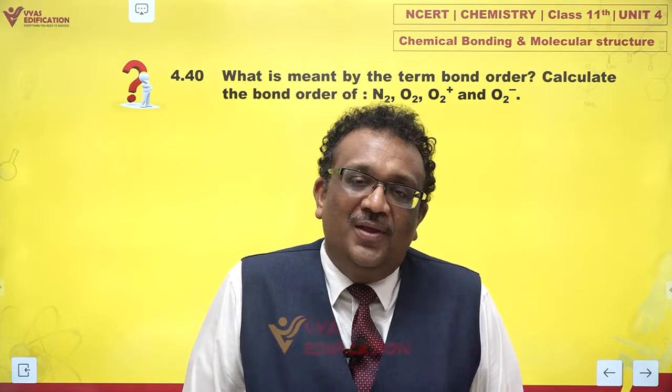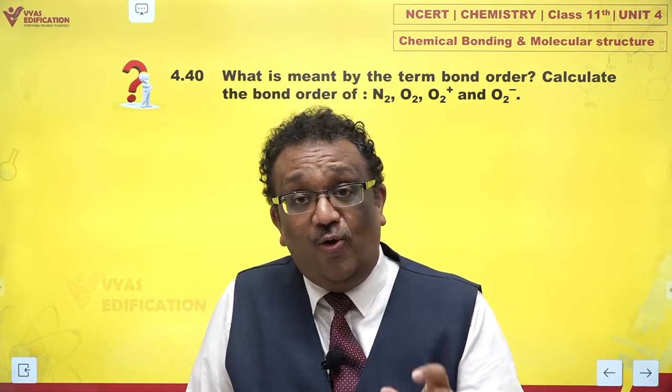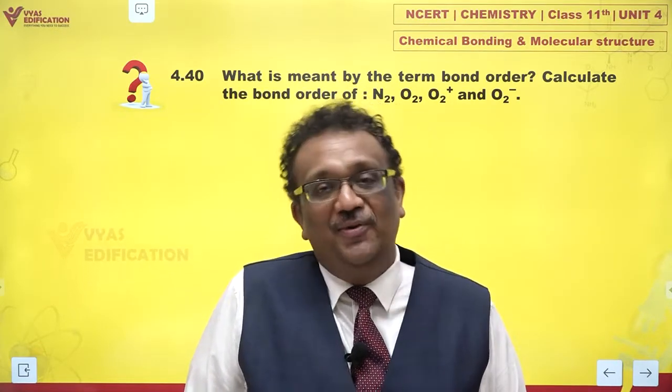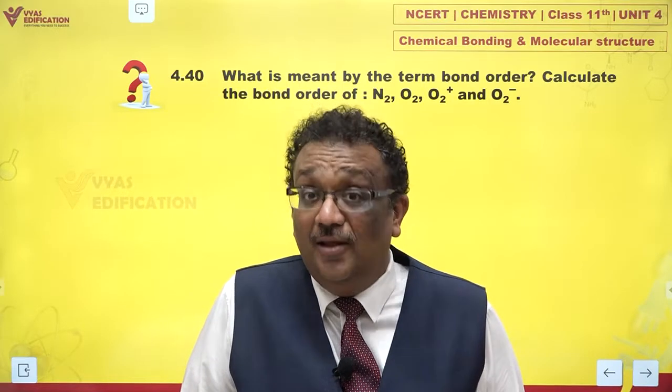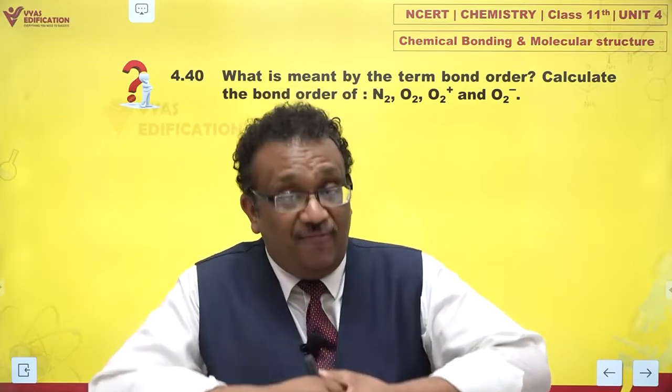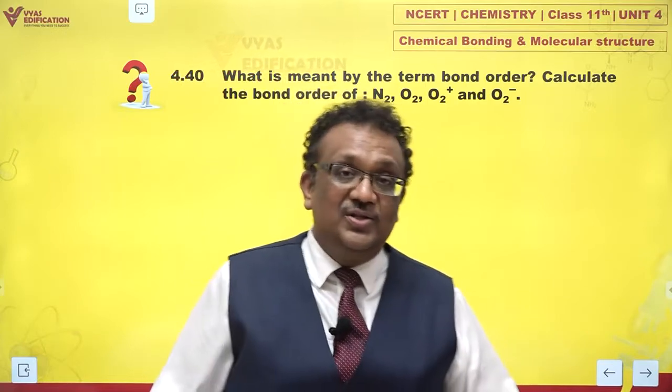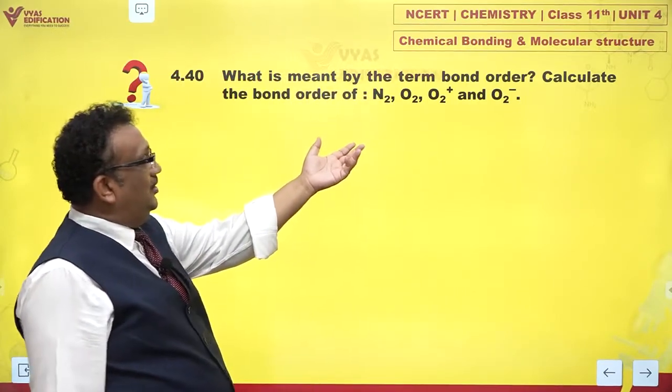What is bond order? Bond order means it is the number of electron pairs shared between two atoms in formation of a bond. While forming a covalent bond, that is called the bond order.